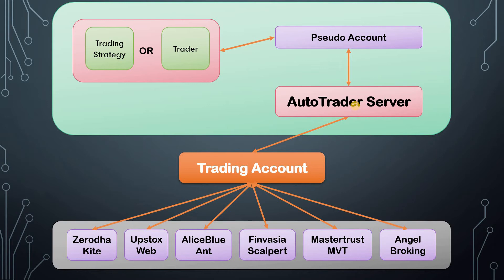We have seen how it is useful to achieve independence in automation, but it also has other advantages for users who are trading manually. It gives you the facility to assign a meaningful name to your trading account. So if you're trading across five different accounts, you can give each a meaningful name — by the owner of the account or any easy-to-remember name — so that you don't have to remember the login IDs of those trading accounts.